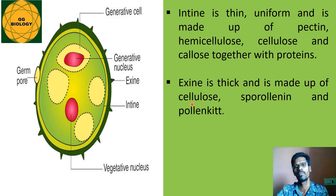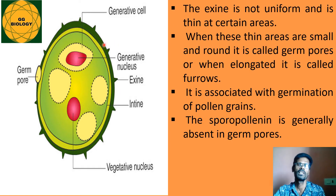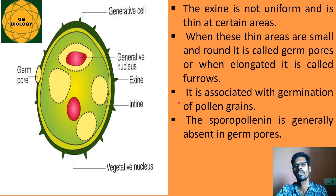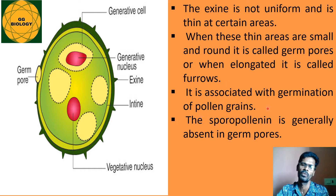The exine is thick and made up of chemicals like cellulose, sporopollenin, and pollen kit. The exine is not uniform — it is very thin in certain areas and thick in others. Where it is thin and rounded, these structures are called germ pores; where they are elongated, they are known as furrows. These features are associated with the germination of the pollen grains.